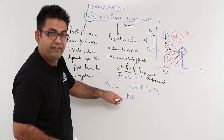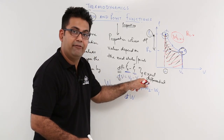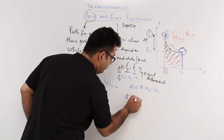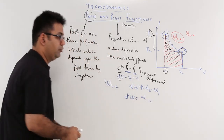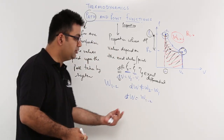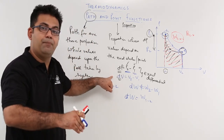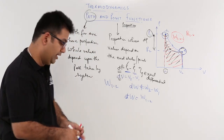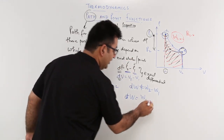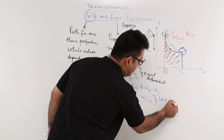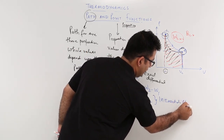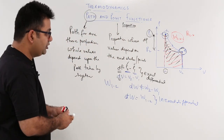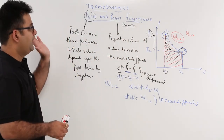This is the difference: dp is an exact differential, while dW becomes an inexact differential. It is denoted as W going from 1 to 2. This is how you represent a point function mathematically and how you represent a path function mathematically. The path function is an inexact differential.